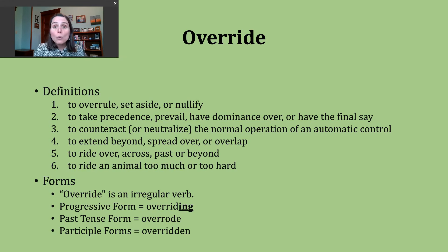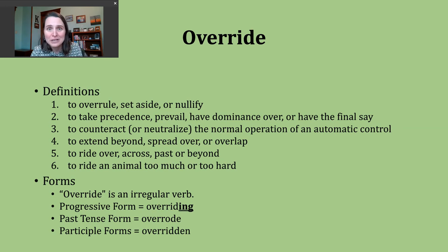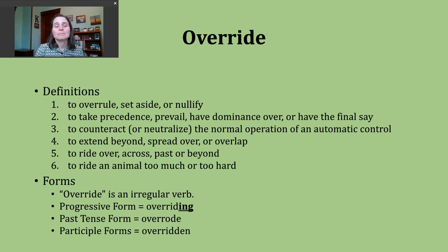Similarly, in workplaces, one level of employee might make a decision, decide to do something. And a supervisor, a boss, a manager, or someone above them might say no, we're not going to do it that way. They change the decision. They have precedence or final say over what's going to be done.